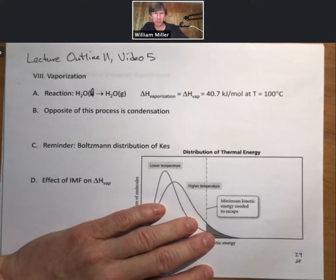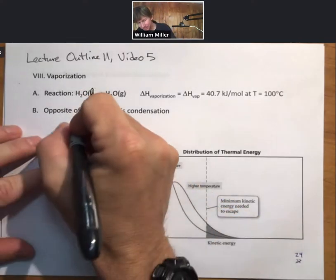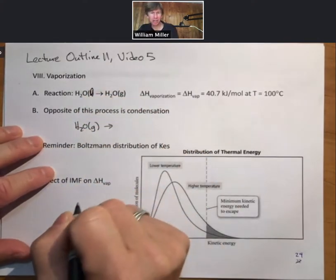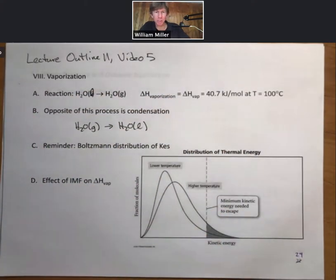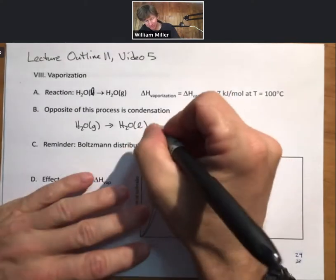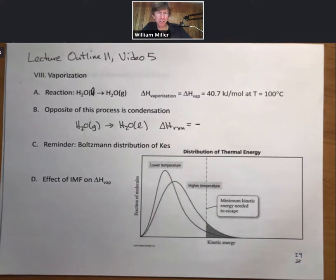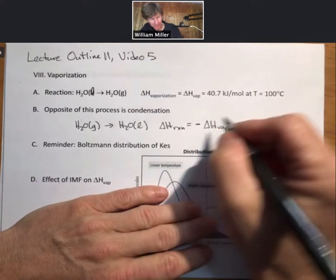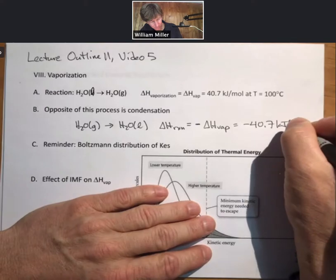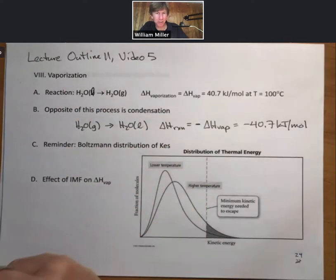This is a number we'll use throughout the rest of the lecture. The opposite process is condensation. When we switch the reactants and products — H2O gas going to H2O liquid — that simply changes the sign of delta H. So delta H reaction equals minus delta H vaporization, which is minus 40.7 kilojoules per mole.